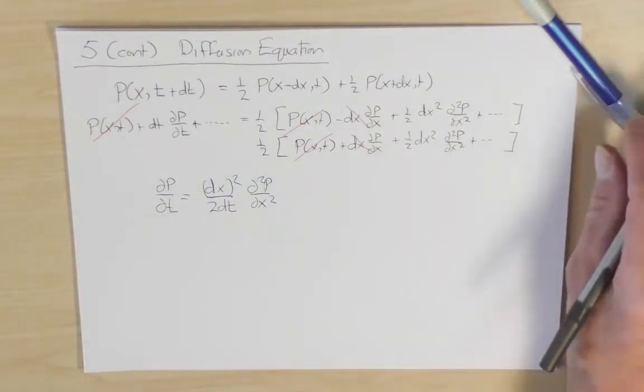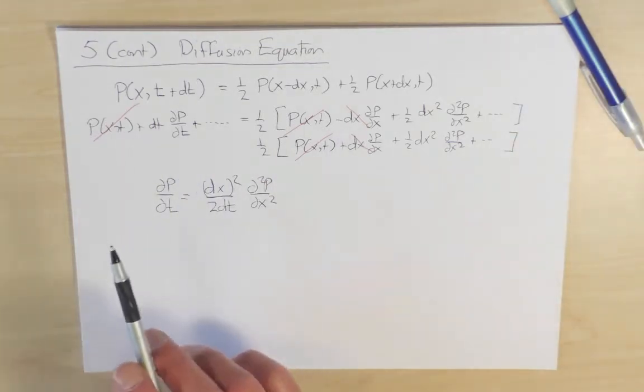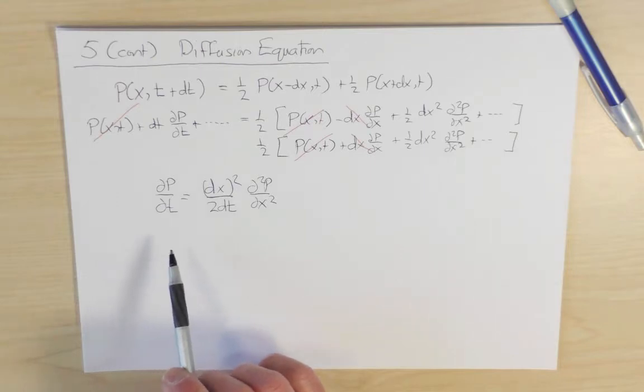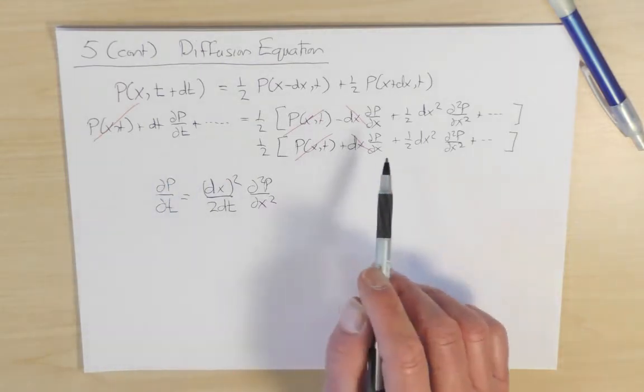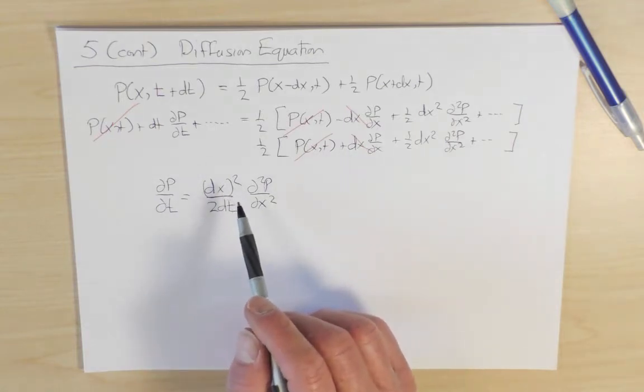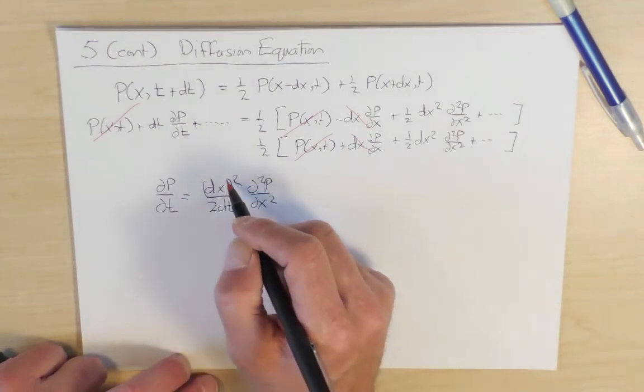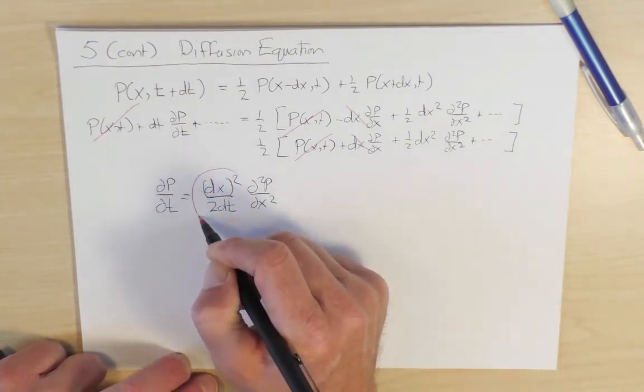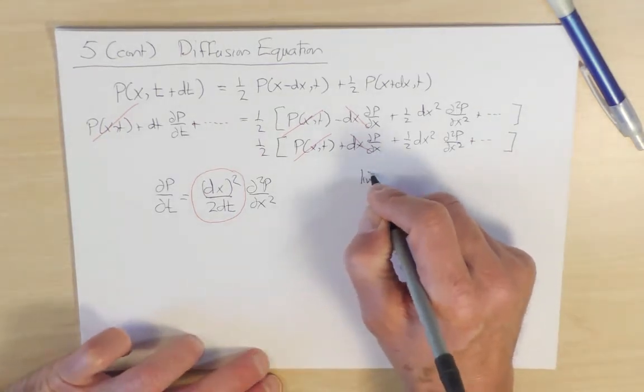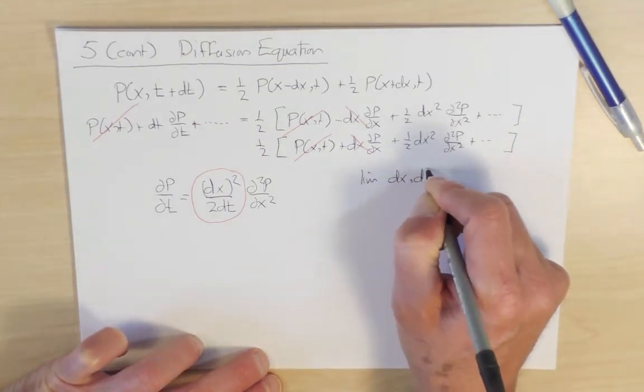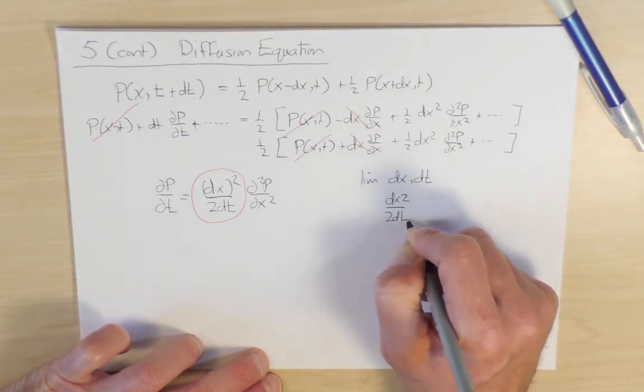Now this equation is the result of taking the limit as dt and dx are both going to zero. And here, something delicate emerges because when we take the limit as dt and dx are going to zero, the only way we get a logical, a sensible equation is that we have to take the limit dt and dx going to zero, such that dx² over 2dt is equal to a constant.